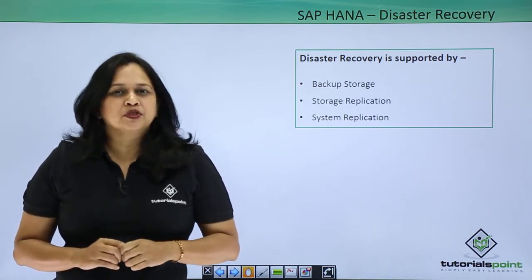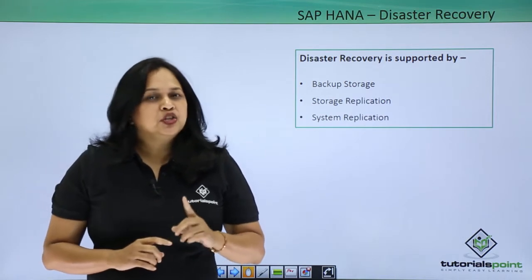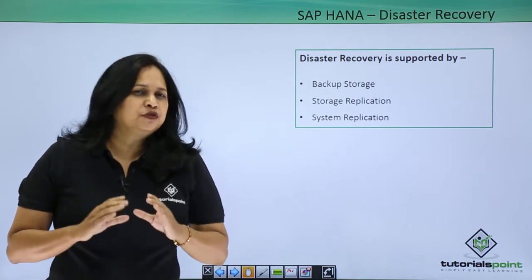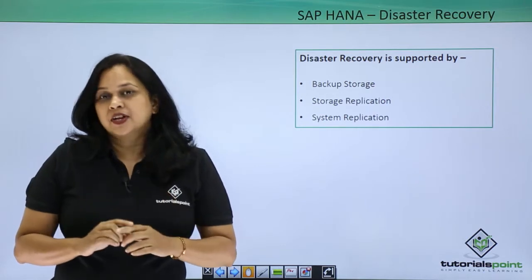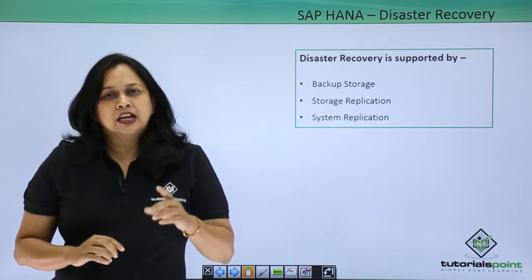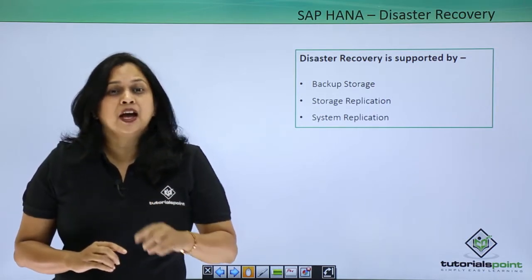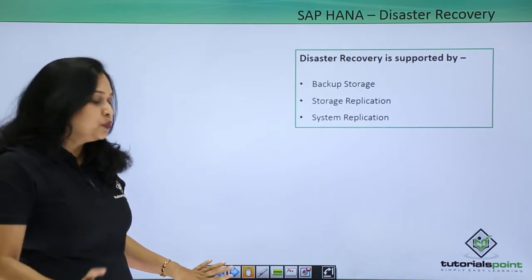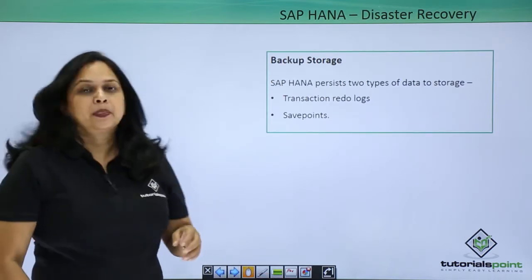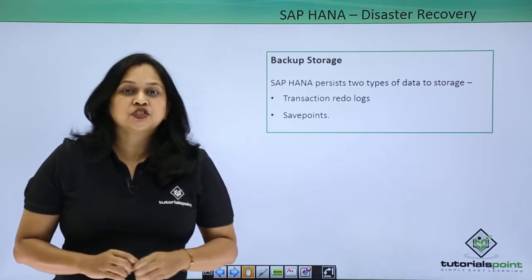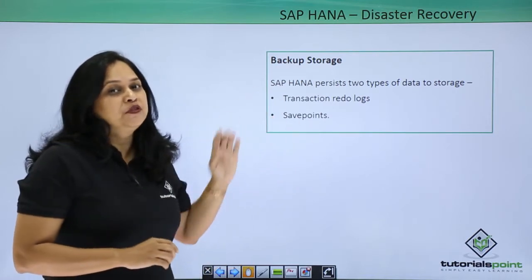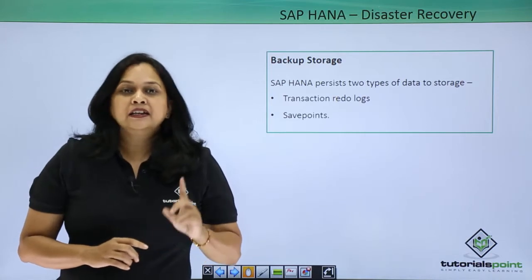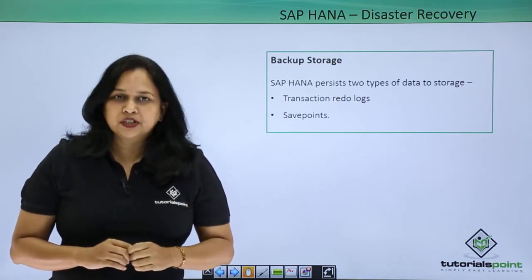SAP HANA uses in-memory technology and provides full persistence for any transaction that changes the data, like row insertions, deletions, and updates. You can resume from a power outage without any loss of data. SAP HANA persists two types of data to storage: transaction redo logs and data changes in the form of save points.